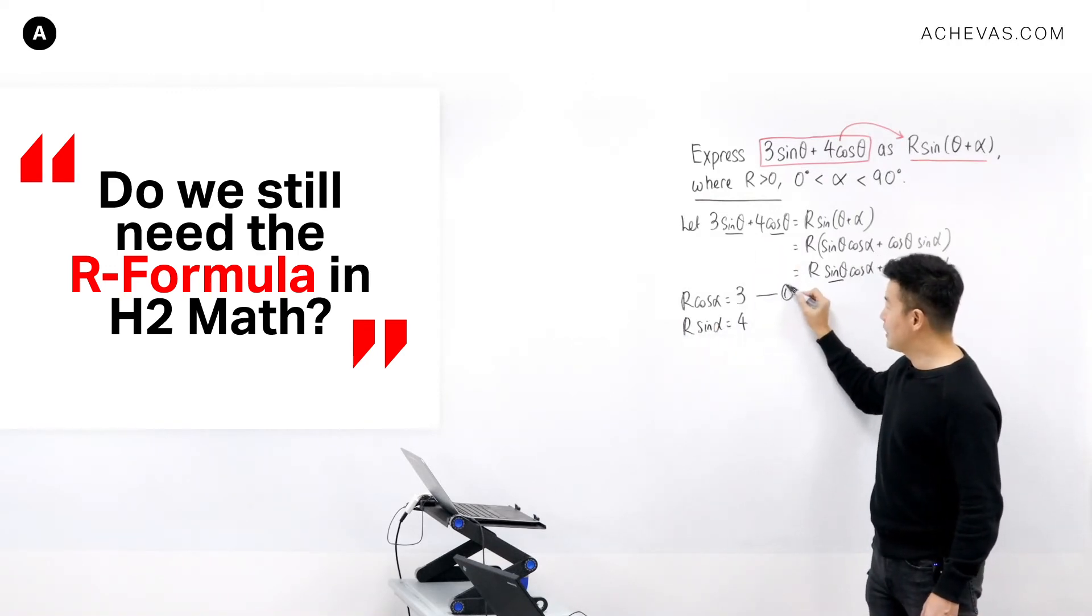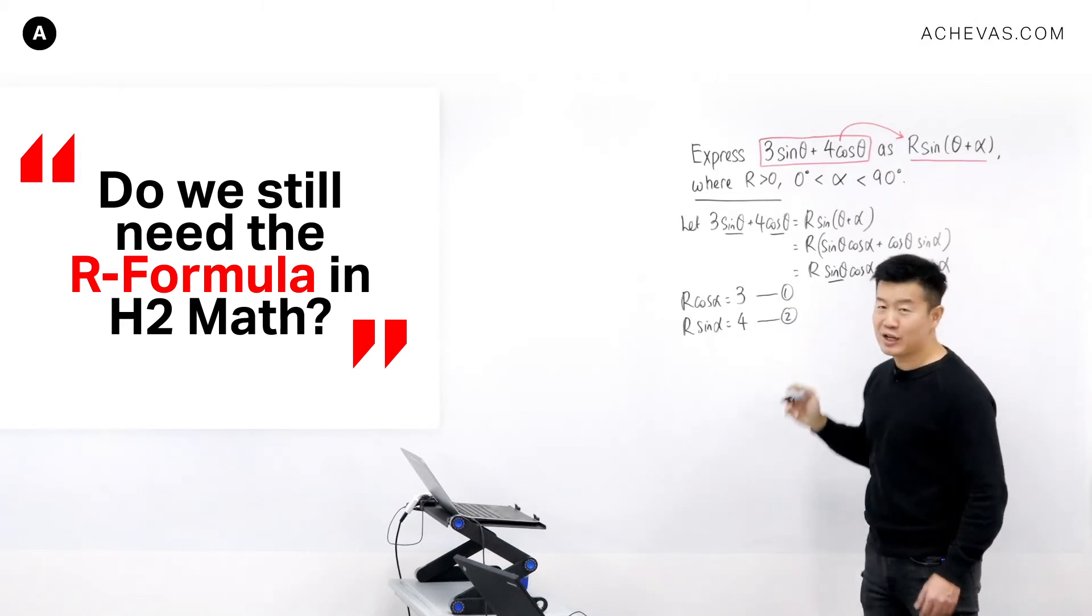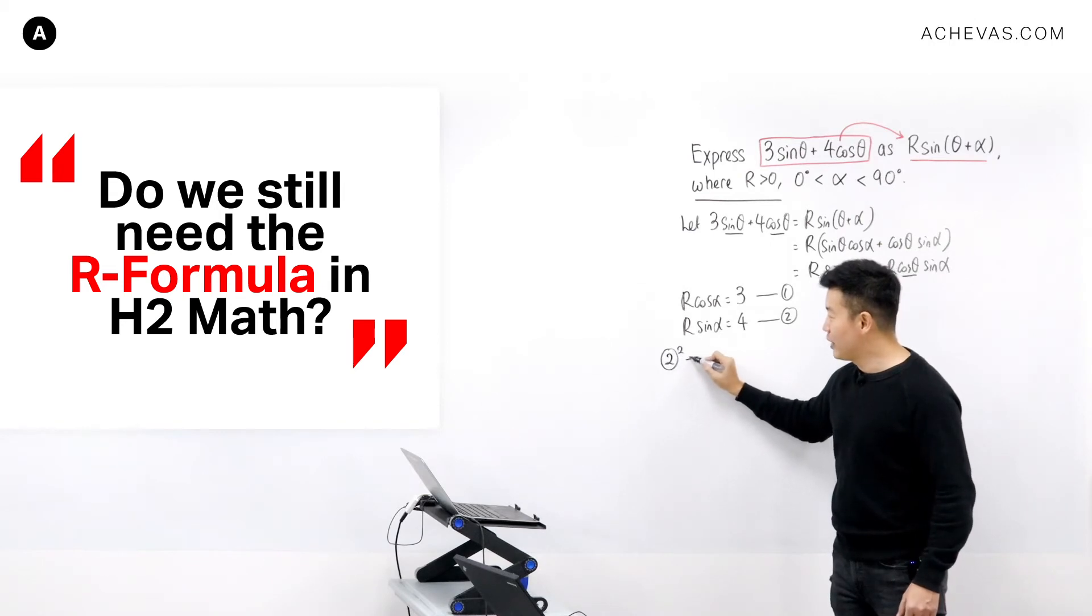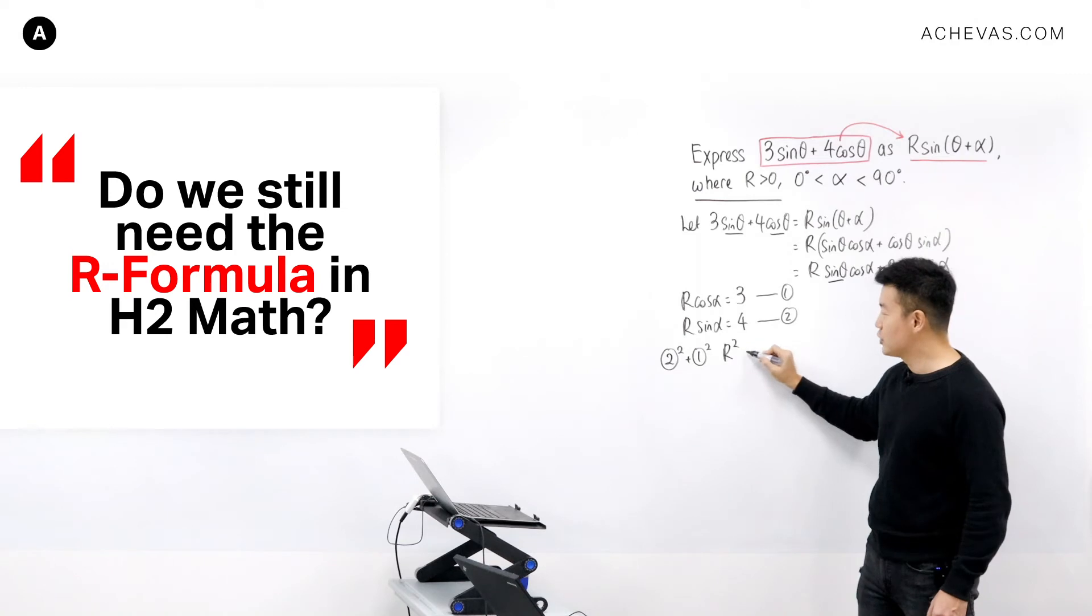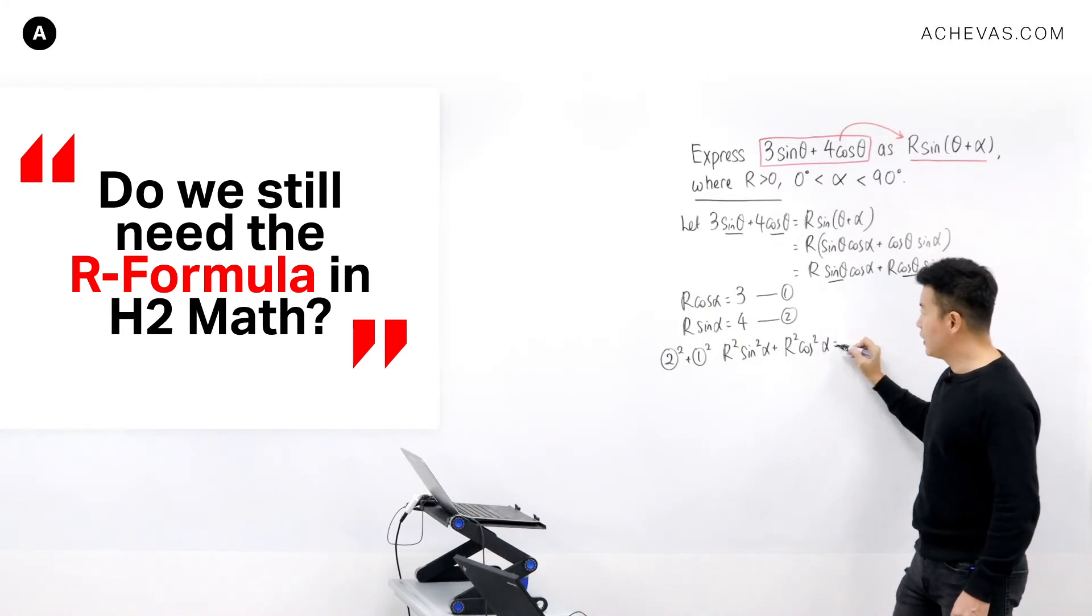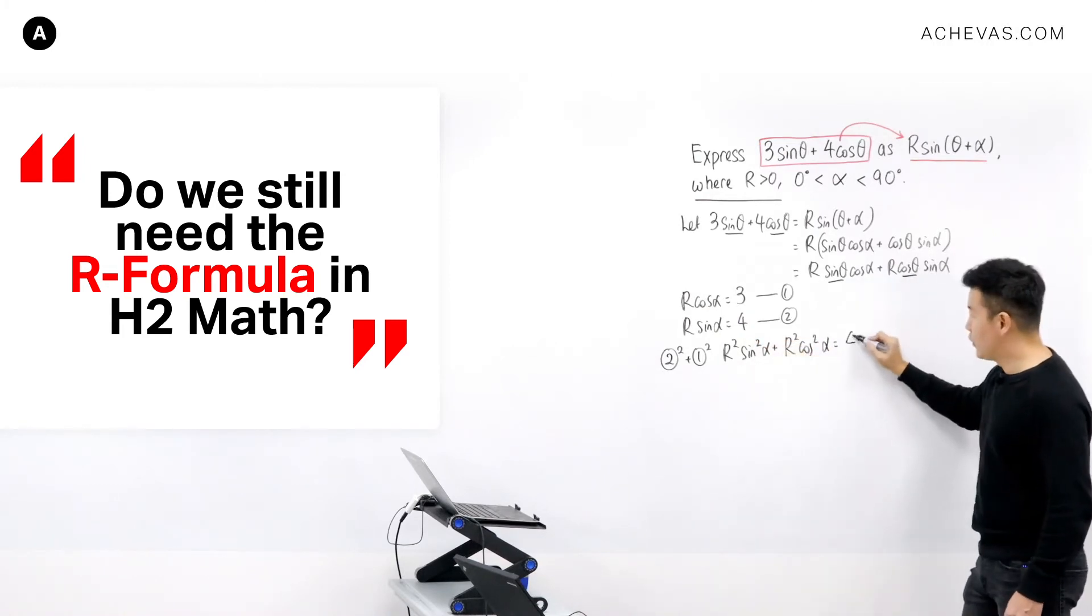And this forms for me my first equation and I have my second equation and we are going to solve them simultaneously. I'm going to take equation number 2 squared plus equation number 1 squared, which will give us R squared sine squared alpha plus R squared cosine squared alpha. And this is equal to 4 squared plus 3 squared.